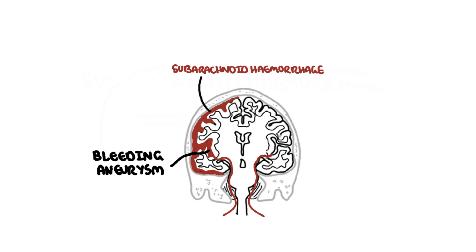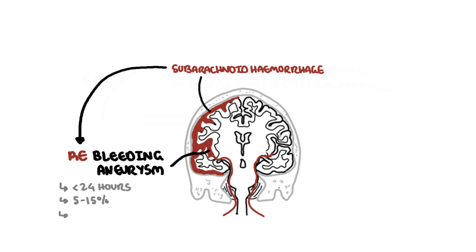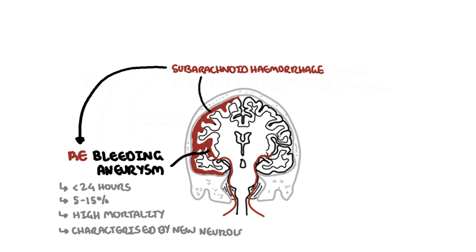Subarachnoid hemorrhage is a medical emergency because it can cause death. In the first 24 hours, re-bleeding from the site of the aneurysmal rupture can occur. This occurs in up to 15% of people and is associated with high mortality. Re-bleeding is characterized by any new neurological deficit.